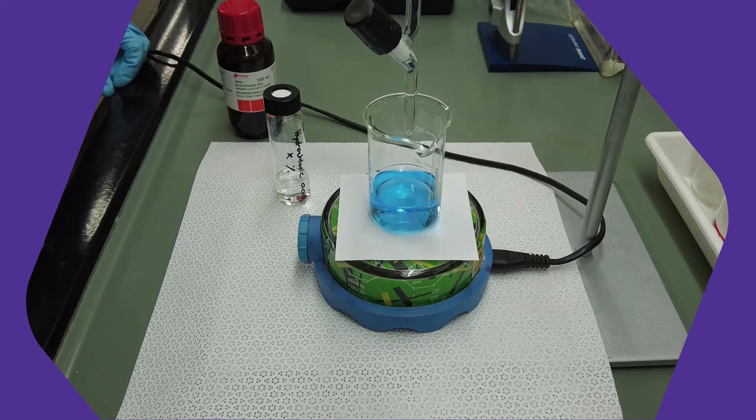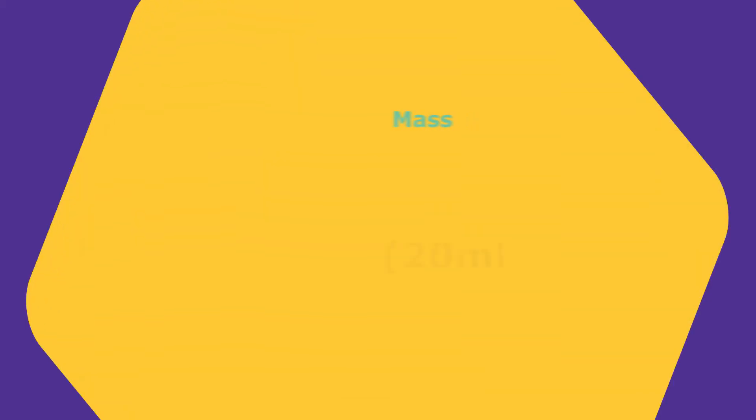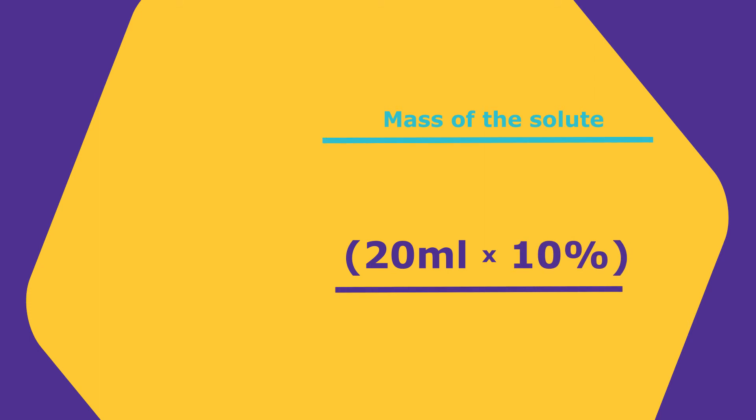Now we can calculate the exact concentration of the hydrochloric acid. We multiply the volume of the sodium hydroxide solution with its concentration. Then we divide the result by the volume of hydrochloric acid. Our analyzed sample of hydrochloric acid has a concentration of 20%.